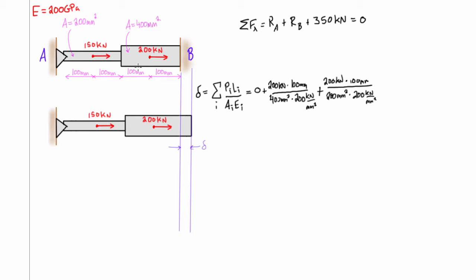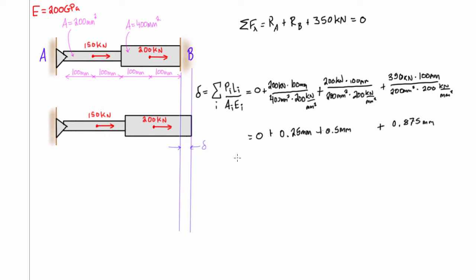When we draw a free body diagram past this point load, the internal axial force changes to 350 kilonewtons coming from the right-hand side. For the final section, we have 350 kilonewtons times the length of 100 millimeters, cross-sectional area still 200 millimeters squared, and modulus of elasticity 200 kilonewtons per millimeter squared. Solving all those terms, we get a total displacement of 1.625 millimeters.